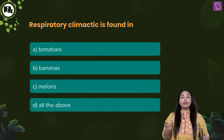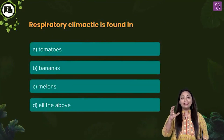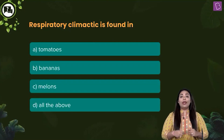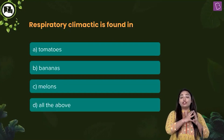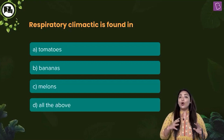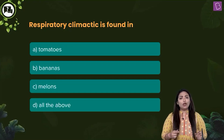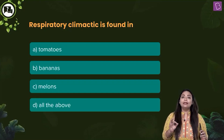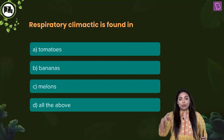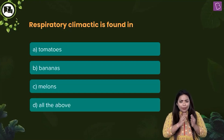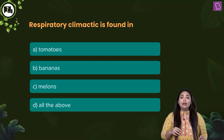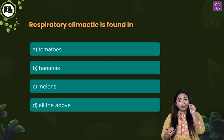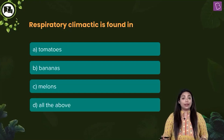Respiratory climactic — what is it? It is the effect brought about by Ethylene where there is an increase in the rate of respiration during ripening of fruits. Ripening of fruit is brought about by Ethylene, and as the process of ripening reaches its peak, the level of Ethylene increases the rate of respiration and brings about many changes. The term 'respiratory climactic' was added because of this very reason.